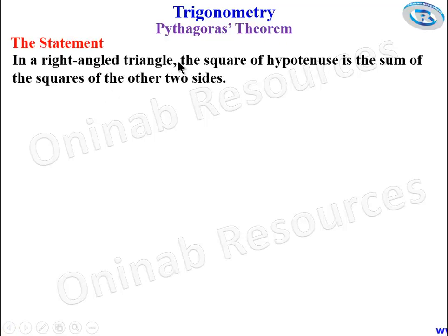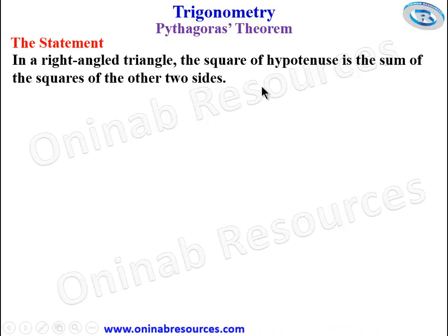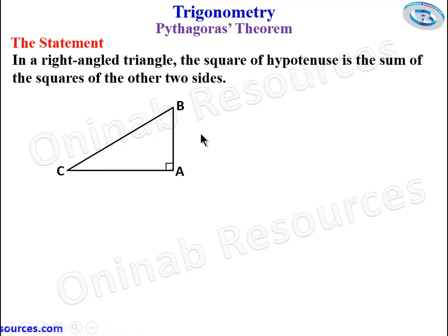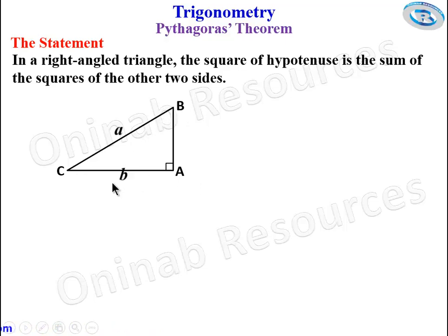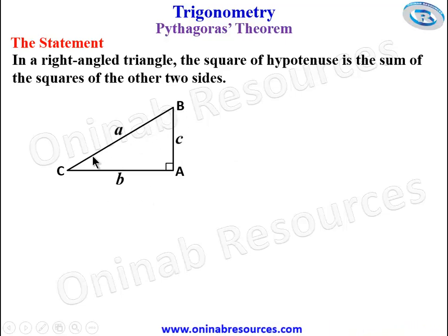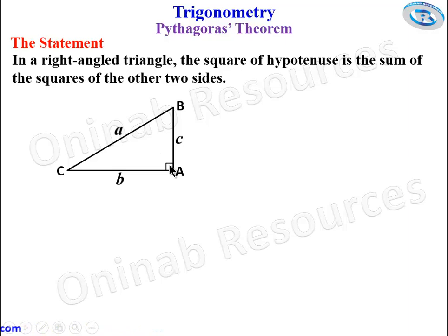In a right-angled triangle, the square of the hypotenuse is the sum of the squares of the other two sides. We look at the right-angled triangle below, labeled A, B, C. The method of labeling the sides is by naming the side opposite angle A as small letter a, the side opposite angle B as small letter b, and the side opposite angle C as small letter c. The longest side of the right-angled triangle is the hypotenuse — that is the side opposite to the right angle.